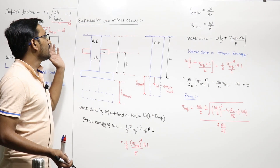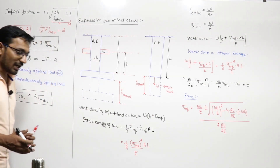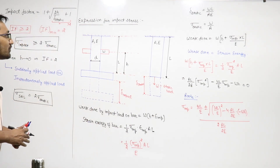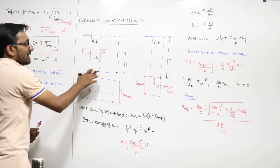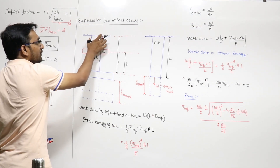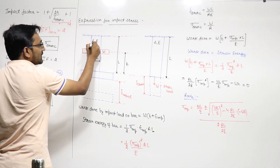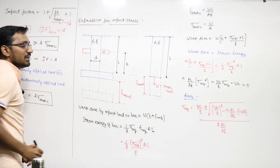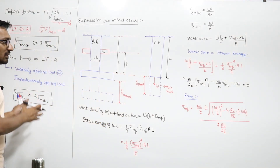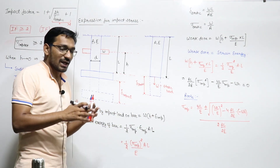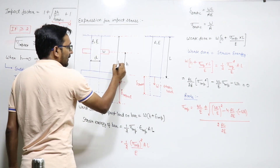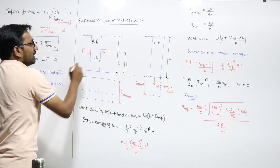Let us derive the expression for impact stress, which equals static stress times the impact factor. Suppose there is a prismatic bar — prismatic means of uniform cross section. We have a uniform cross-section bar whose area is A, Young's modulus of elasticity is E, length is L, and diameter is D.